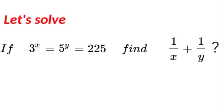Hello and welcome back to Maths Plus. Today we have an exponential equation: 3 to the power of x plus 5 to the power of y equals 225, and we're finding 1 over x plus 1 over y.